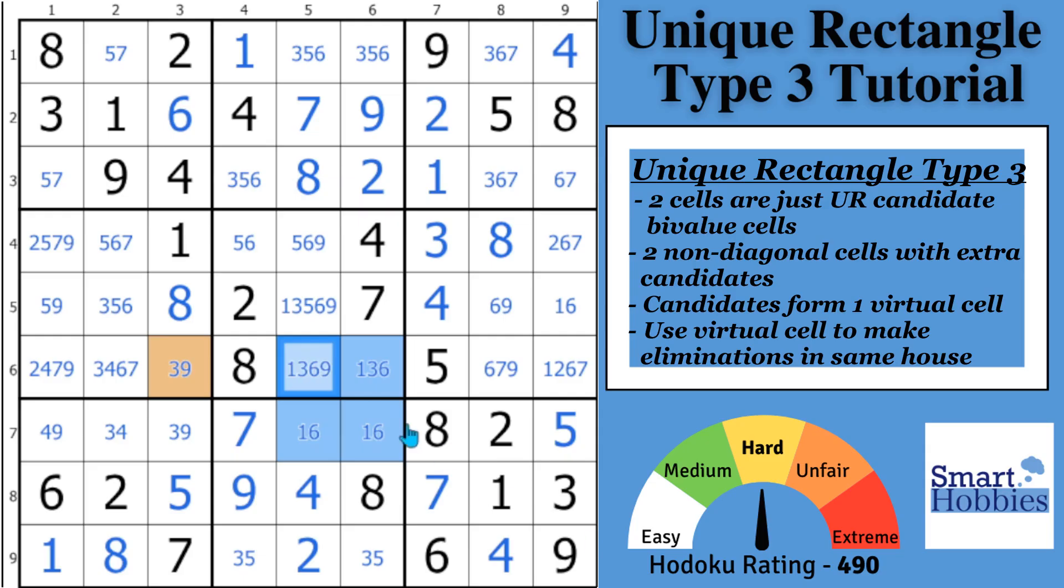In order to avoid that, you know that one of these cells has to contain either a 3 or a 9. If you put one of those in there, you'll break the deadly pattern and give one unique solution. Since you have another cell in the row that has a 3-9, what you know then is that one of the 3-9 candidates has to be here. The other one has to be in there. This acts as a virtual cell. You know either a 3 or 9 is here and a 3-9 is there. This is the most basic type of unique rectangle type 3 that you will find.